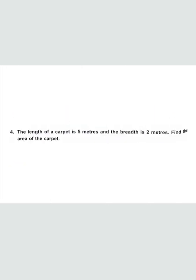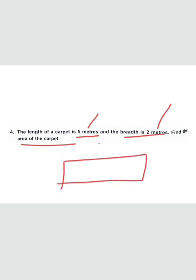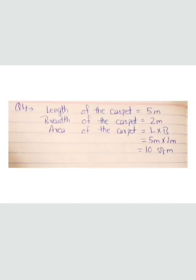Question number four: the length of the carpet is 5 meters, breadth is 2 meters — find the area. A carpet is rectangular in shape, so area of the carpet equals length multiplied by breadth. Length is 5 meters, breadth is 2 meters, area equals 5 × 2 = 10 square meters.